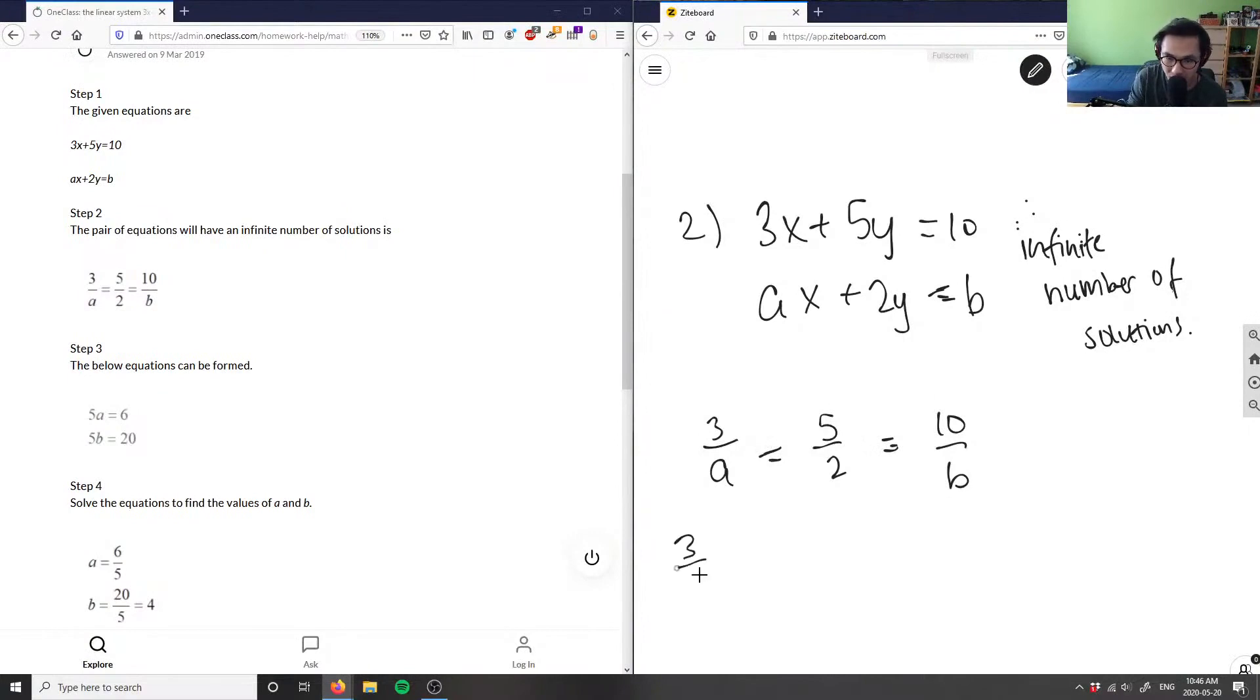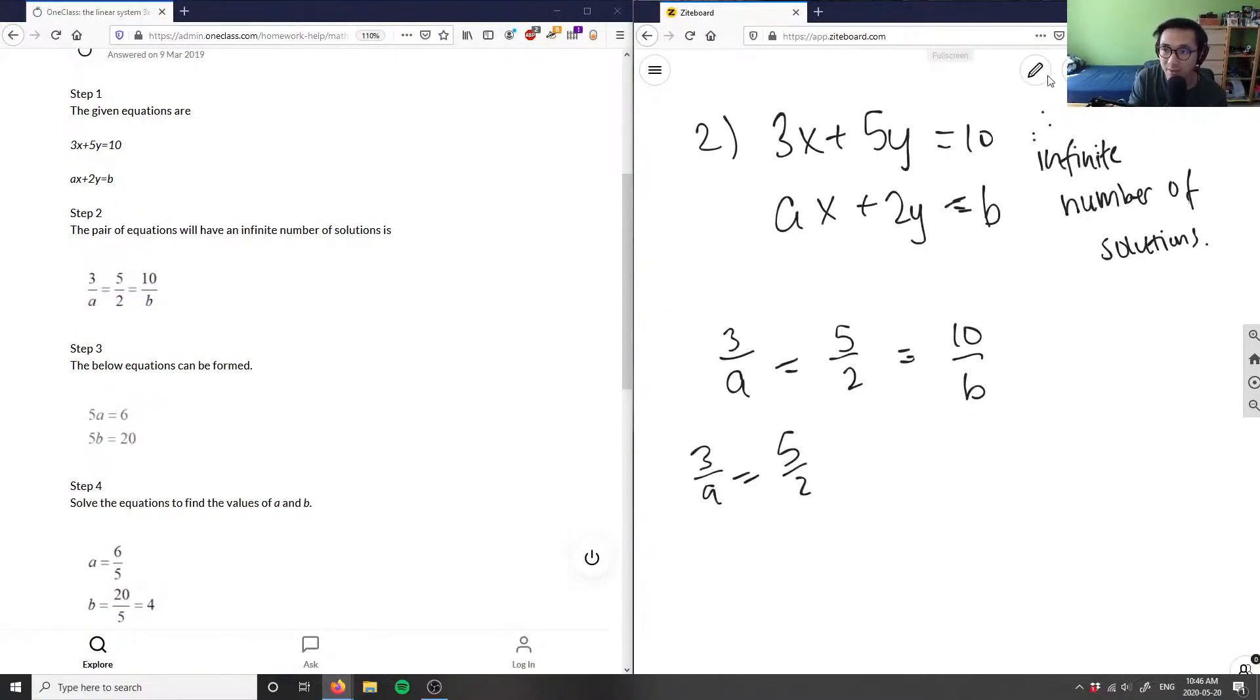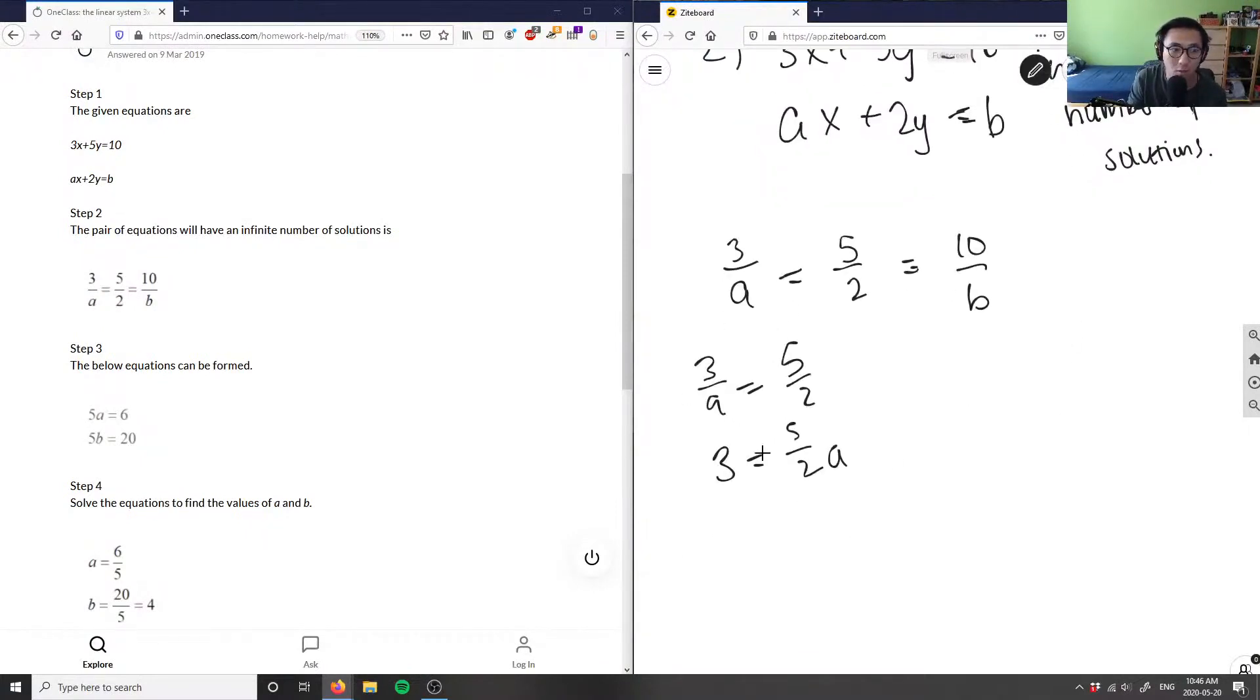If I want to isolate for a, I'm going to multiply both sides by a. So I get 3 equals 5 over 2 times a, which means a equals 3 times 2 over 5.